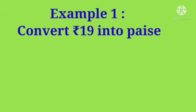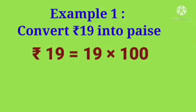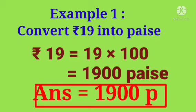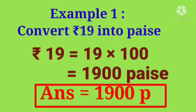Example 1: Convert rupees 19 into paise. So rupees 19 is equal to 19 multiply with 100, which is equal to 1900 paise. So rupees 19 is equal to 1900 paise as the answer.